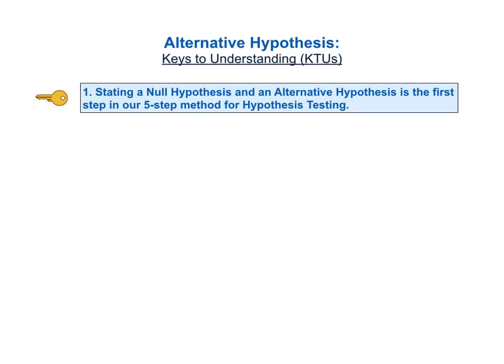As usual, in the book and in these videos, we'll start out with a list of keys to understanding, or KTUs, so that you can see on one page the most important things to understand about this concept. There are four keys to understanding for the concept of alternative hypothesis.